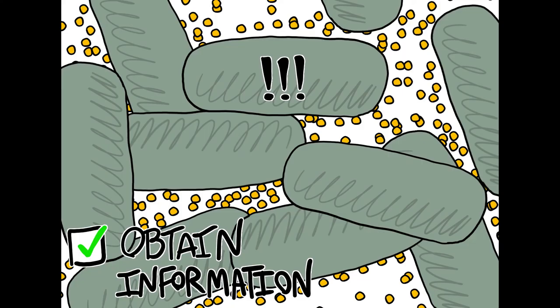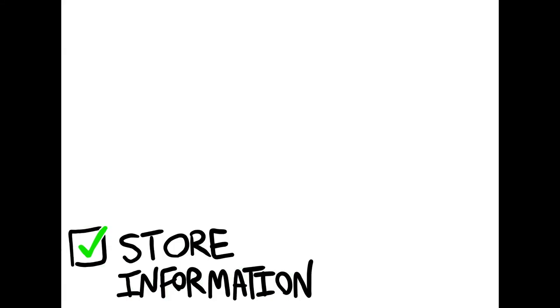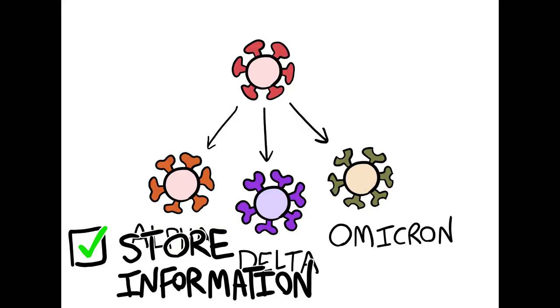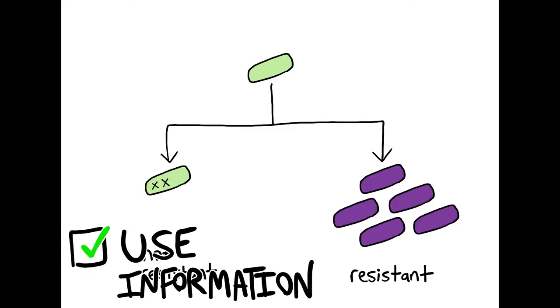Bacteria can take in information by sensing their quorum, the population density of their environment via chemical signaling. Information is stored in bacterial colonies, tumors, and viral populations via the mutations of surviving members, and that information is used to resist treatment and immunity.